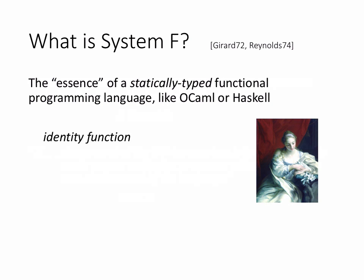Here's a little example of System F. This is how you write the polymorphic identity function in Haskell — a function that takes its argument and immediately returns it. It's polymorphic, meaning it can have any type. It's still statically typed: it's a function where you know the output is exactly the same type as the input. System F is a little more explicit: you have to say when you're abstracting a type. Just like lambda defines a function, we also use lambda to say this function works for any type alpha, a type variable.